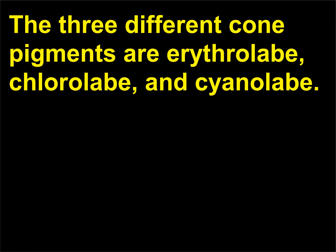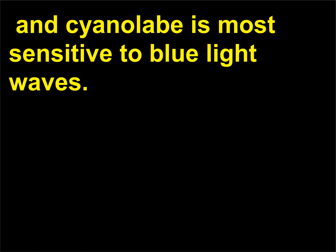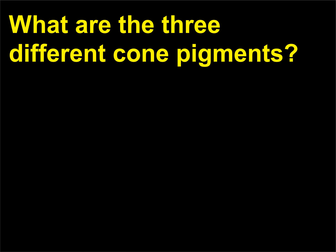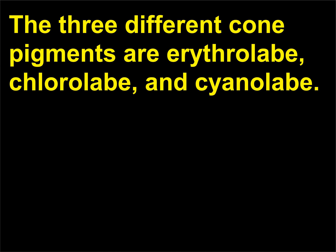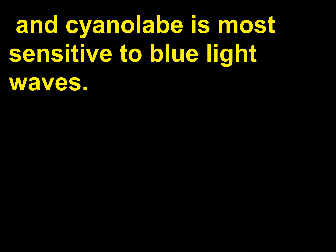The three different cone pigments are erythrolabe, chlorolabe, and cyanolabe. Erythrolabe is most sensitive to red light waves, chlorolabe is most sensitive to green light waves, and cyanolabe is most sensitive to blue light waves.